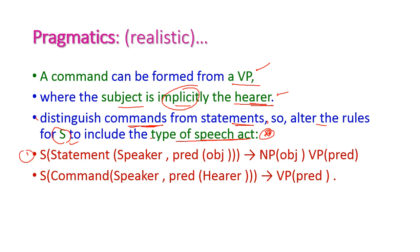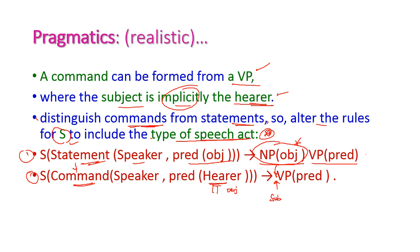The first rule is for a statement: S(statement(speaker, predicate(object))) implies NP(object) followed by VP(predicate) — when a noun phrase object is included, it is a statement. The second rule is for a command: S(command(speaker, predicate(hearer))) implies VP(predicate) — when there is no noun phrase subject, it becomes a command. The subject is implicitly understood to be the hearer. So for a command, only the verb phrase of predicate appears, with no explicit subject.